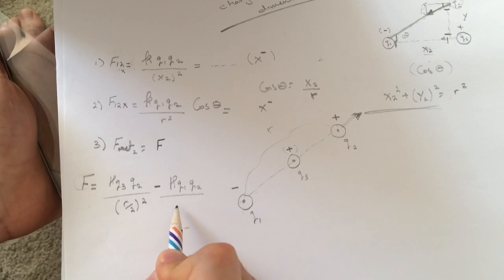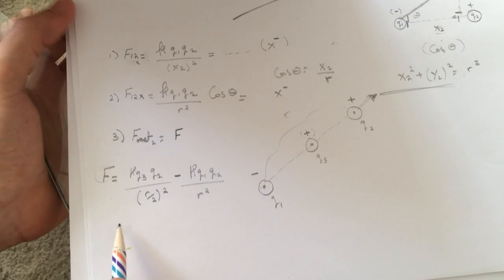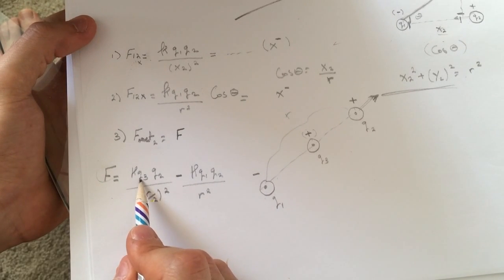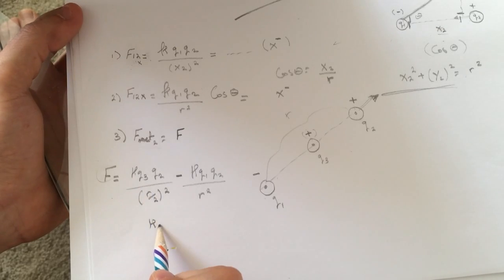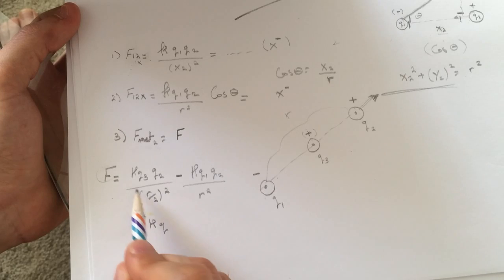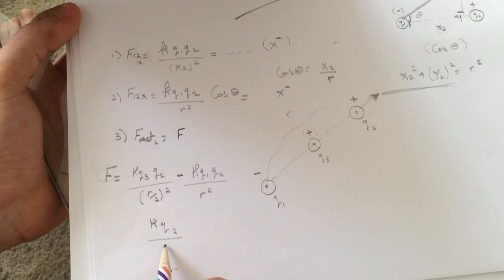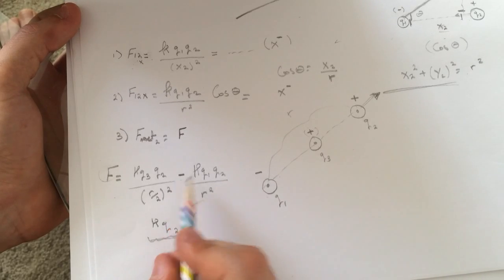So we need to find the Q3 right so let's take the common factor here K Q2 divided by... I'll just keep it like this.